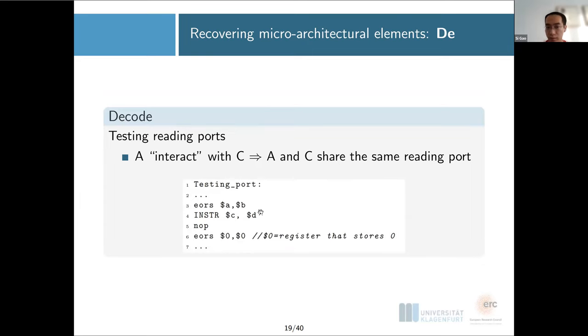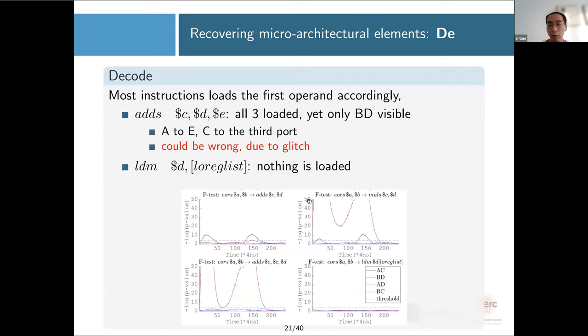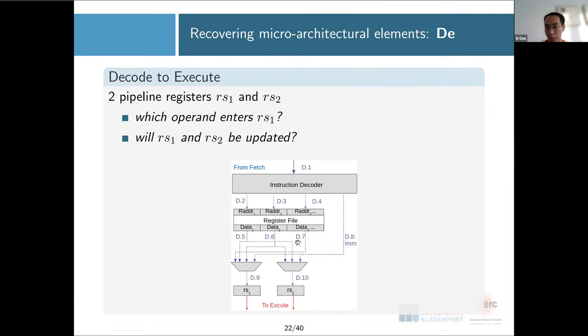Briefly about the results here: for two operand instructions like add or multiply, you always see AC, the blue line, and BD, the red line. For one operand instructions, you only see AC but no BD. For maybe these three register additions, you see all the three operands, but you can only see BD here. So we assume A goes to E and C goes to the third port. This might be wrong, or this might be due to glitches, but this is the best we can get. And there are also other instructions that don't really load anything.